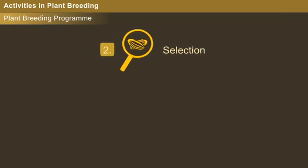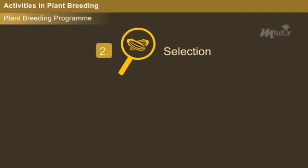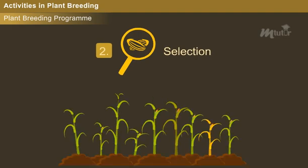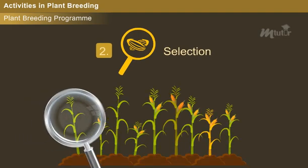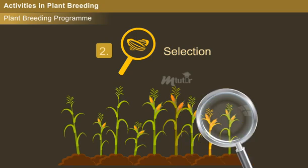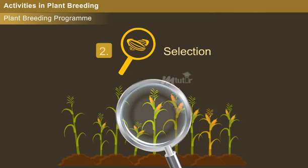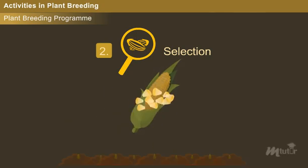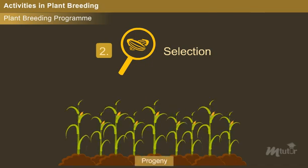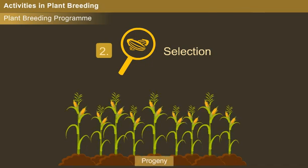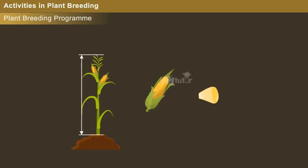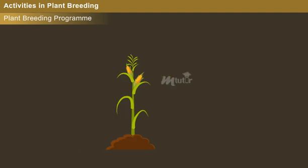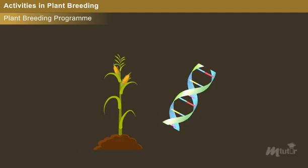Selection: The selection process involves two key steps. Firstly, to identify and isolate the plants with desirable permutation of characters. Secondly, to cultivate the progeny of such isolated plant varieties. Generally, the selection process is done based on the phenotype, but in some cases it goes with the genotype of the chosen traits.